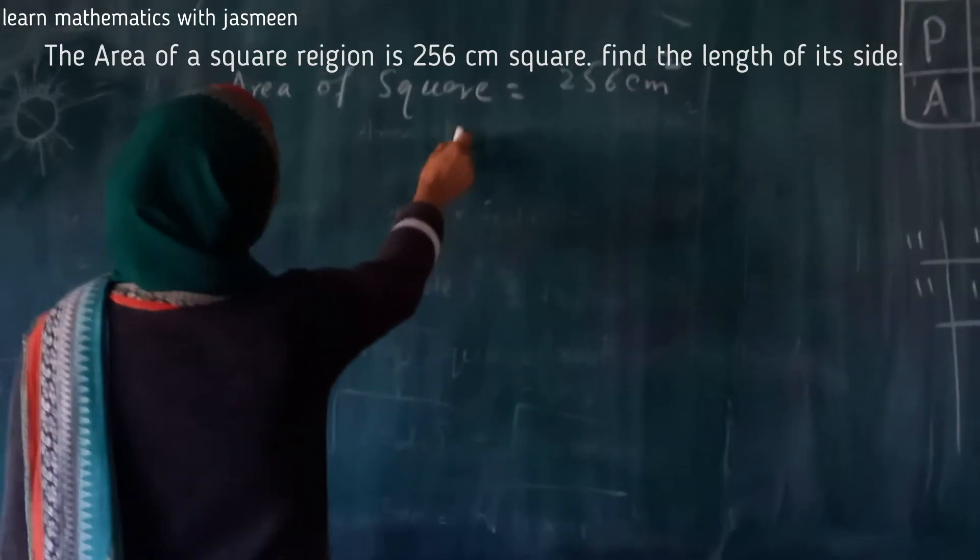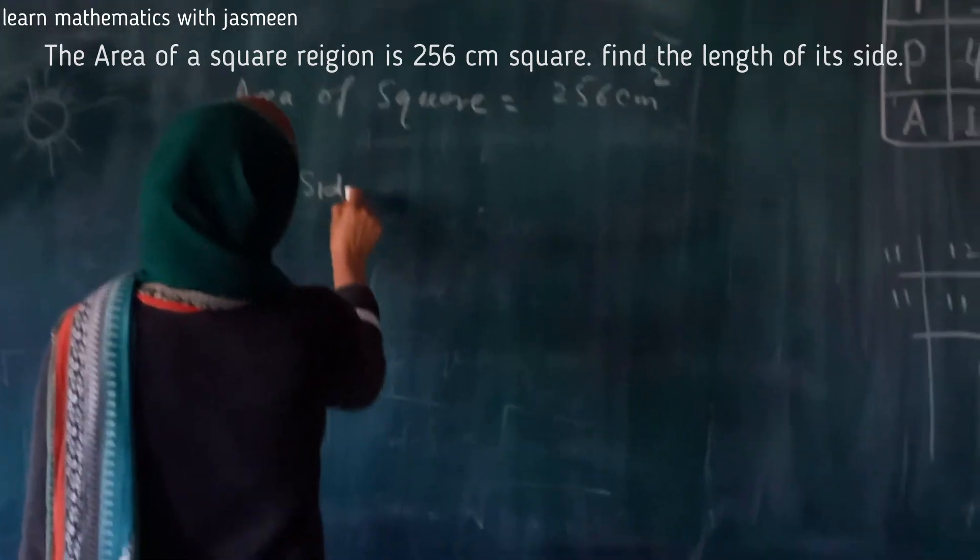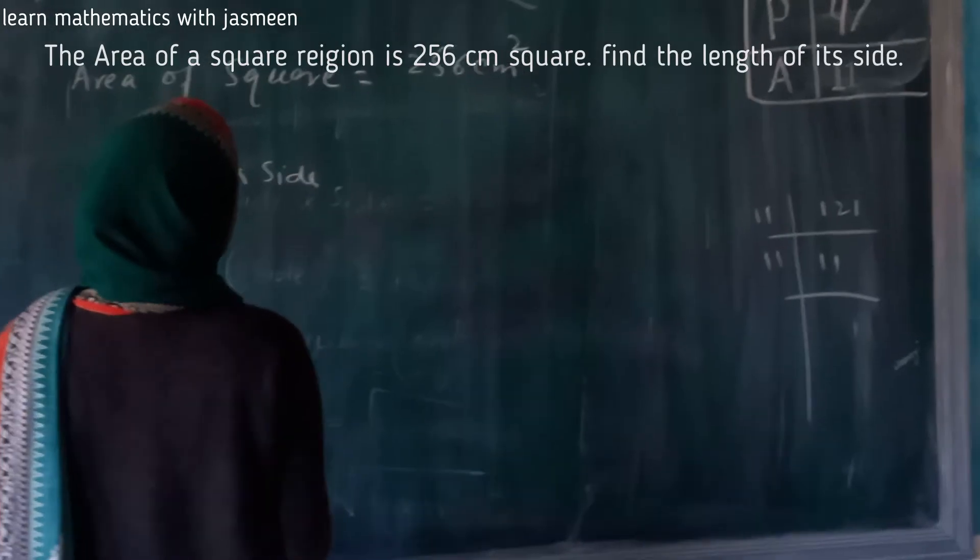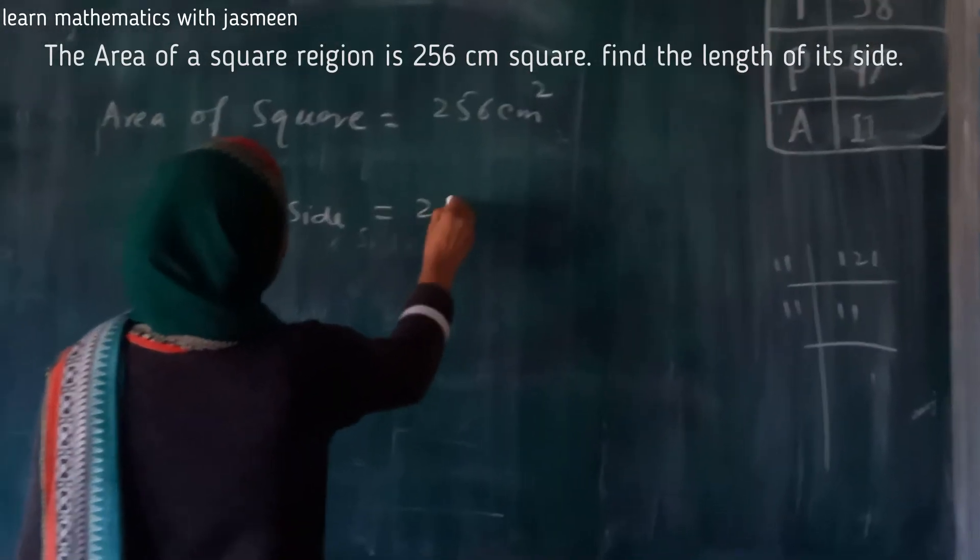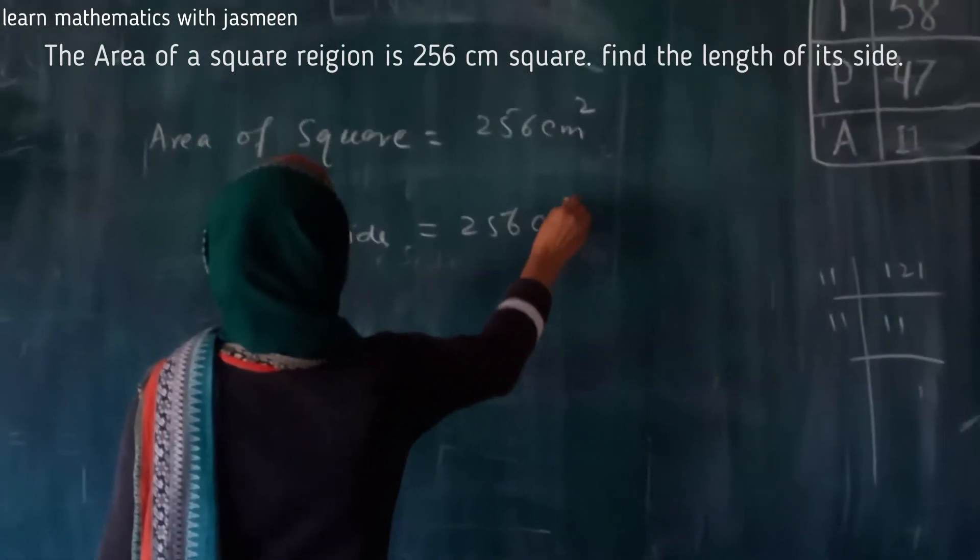So area of square, what is the formula? Side multiplied by side. This is equal to 256 centimeter square.